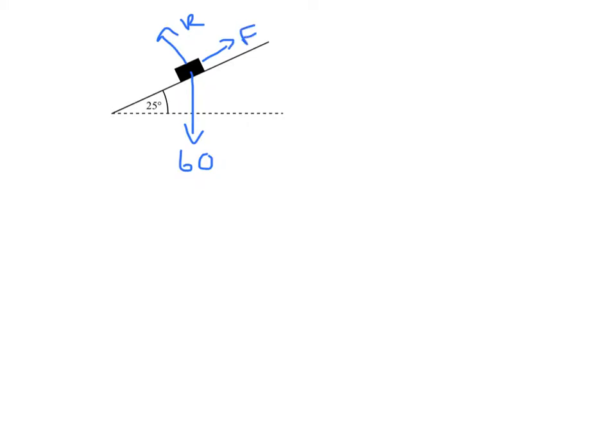Friction always opposes motion, so it'll be going up the slope. I'm going to now resolve my forces, and we're going to have 60 sine 25. I always remember this: S for sine, S for slope.